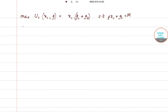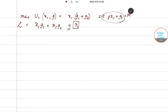Let us form the Lagrangian multiplier equation: L = X1·G1 + X1·G2 + λ(M − P·X1 − G1). Our choice variables are X1 and G1. There is G2 also, but since we are optimizing for the first individual, he has no say in how much the second individual contributes to the public good, and hence the only choice variables available to us are X1 and G1.